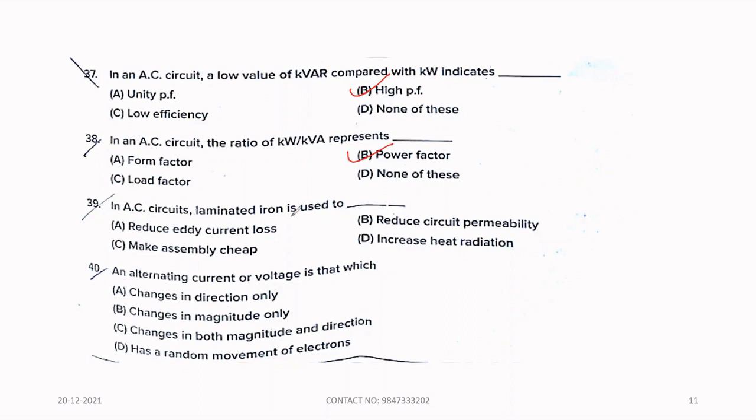Thirty-nine. In AC circuit, laminated iron is used to. Option A, Reduce the eddy current loss. Forty. An alternating current or voltage is that which option C changes in both magnitude and direction.